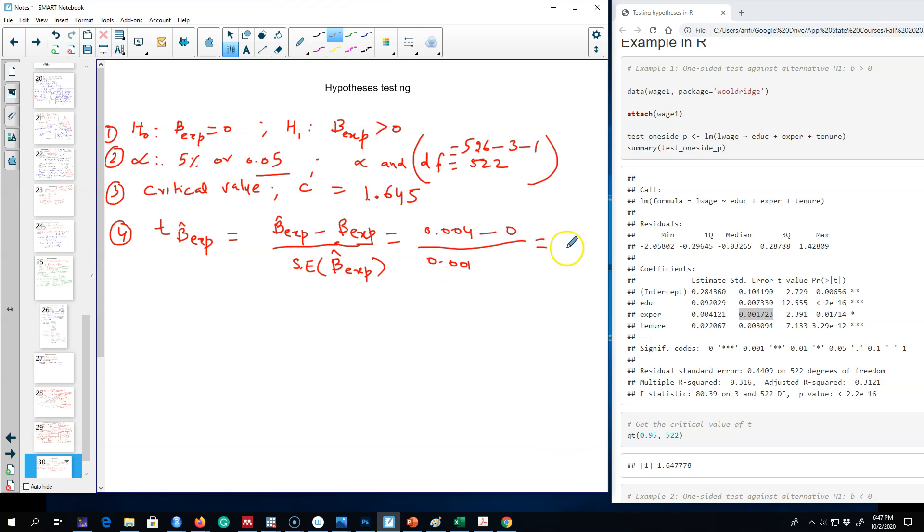Now we have everything. This is our rejection rule: reject H0 if this t value is greater than the critical value. We are assuming the mean beta is zero—that is our hypothesis. Now we have to compare this to the critical value.